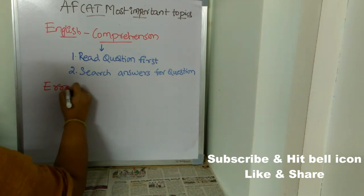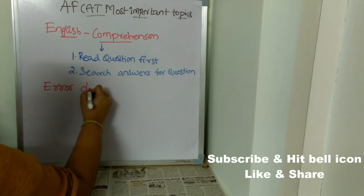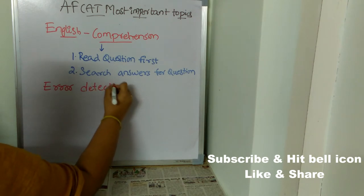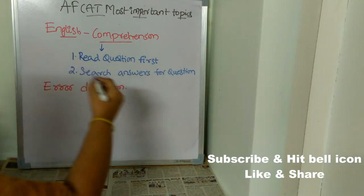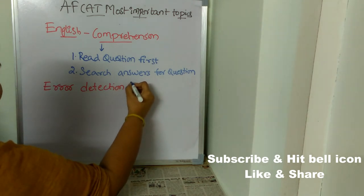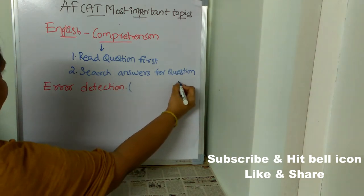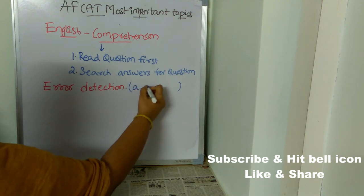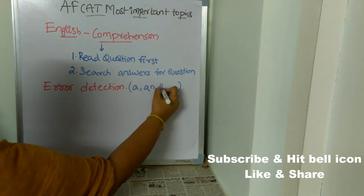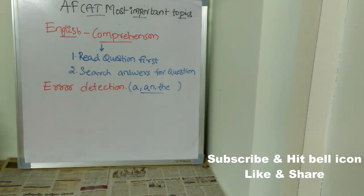Coming to error detection also, I'm going to give you a tip. In most cases, error detection will involve simple words such as 'a' and 'b', so you need to concentrate on these kinds of prepositions.